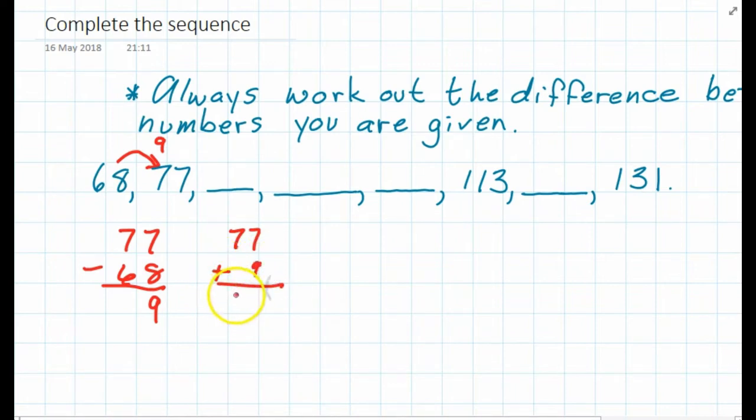So 77 plus 9 is going to be 86, so we would be writing 86 there, and then again 9, 9, 9. The important thing is when you're done and you filled in all these numbers here, whatever they are, you need to double check that you have actually added 9.